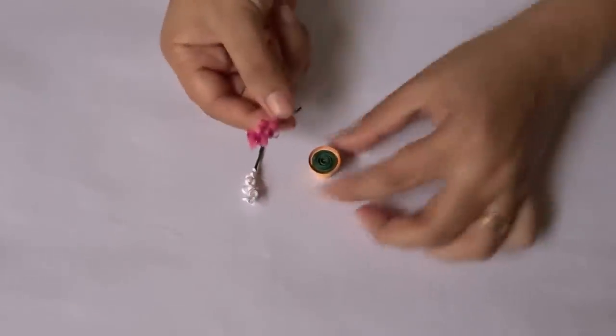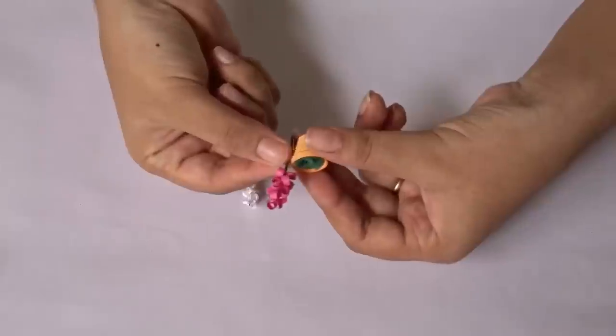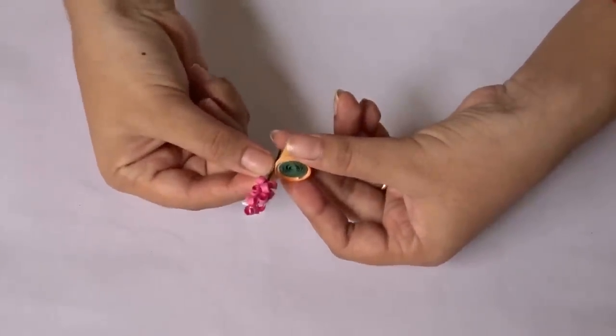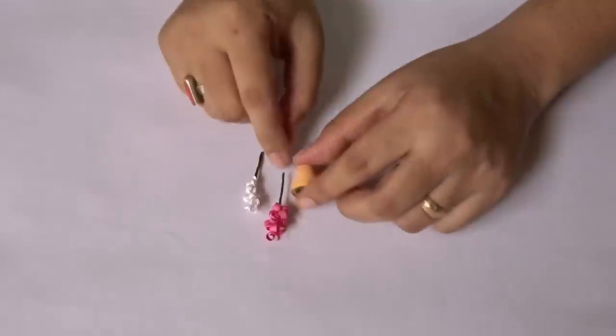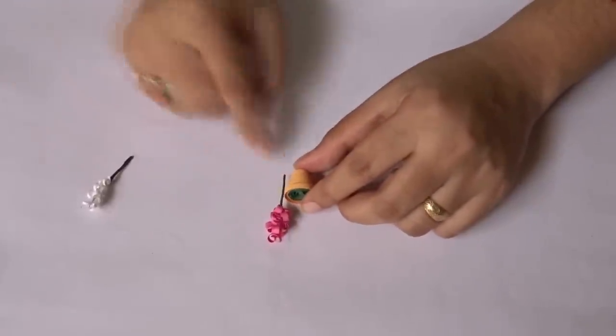Now check the flower with the pot. If it's okay then go ahead, or if it's too high then cut the wire a little bit.